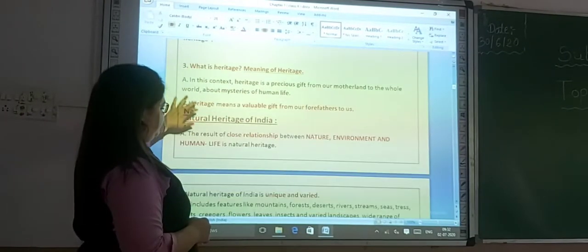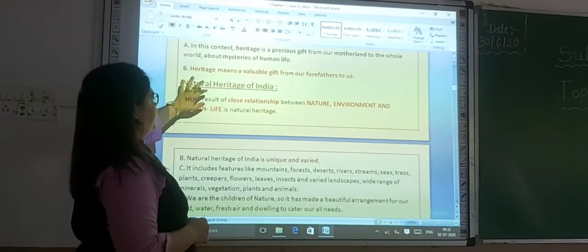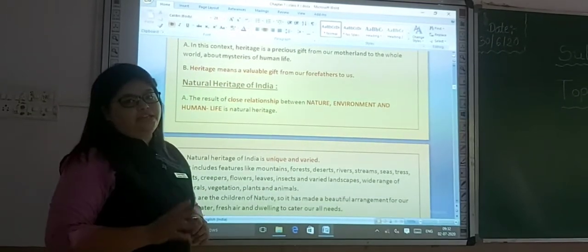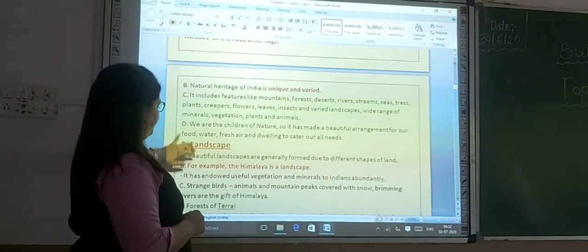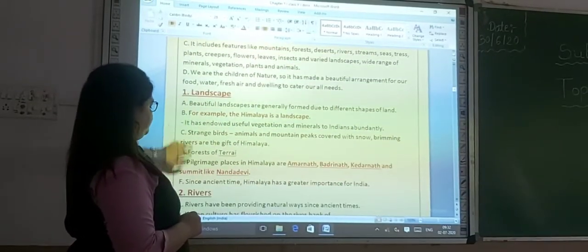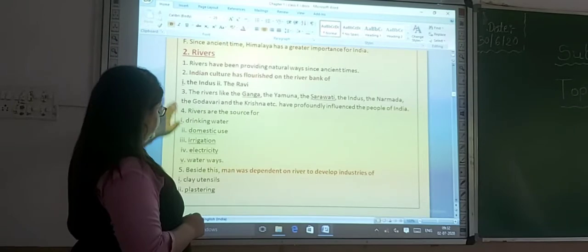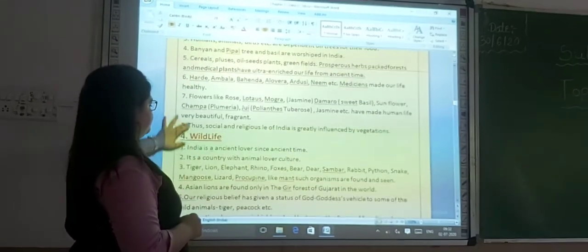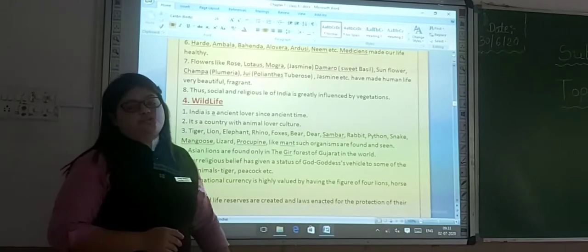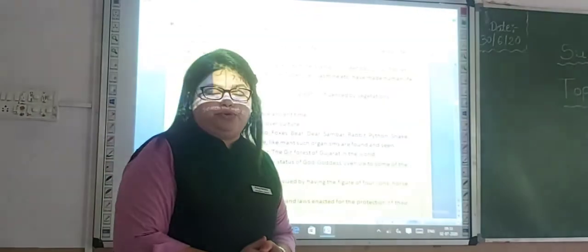Now we also showed cultural heritage, what is the meaning of heritage we showed that also. Then national heritage of India. There are four different parts in the national heritage of India. The first one is landscape, then the river, then the vegetation and the last one is the wildlife. We showed all the points in our last video.